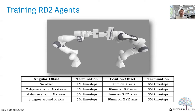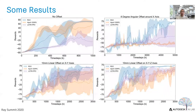The table shows the details of each task — harder tasks result in failure among all three algorithms and are therefore not presented. We compare RD2 with APEX DDPG and PPO with LSTM. Our algorithm, shown in blue, achieves the best performance across all tasks — both the four shown here and the other four. In some hard tasks, such as an eight-degree angular offset around the x-axis, RD2 is the only algorithm that can solve the task.